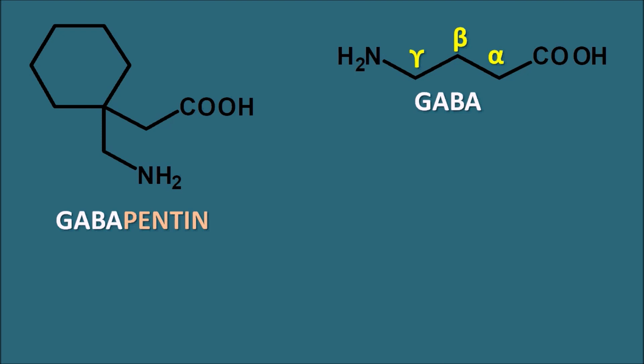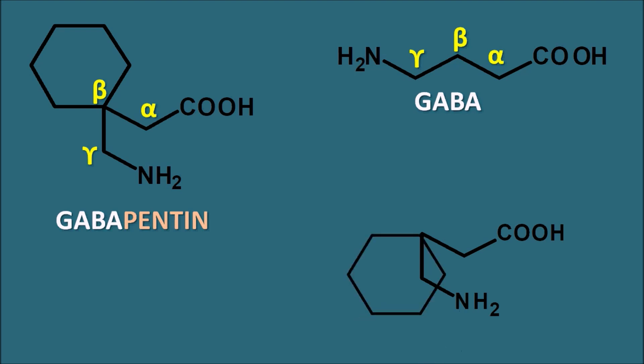We can observe the GABA moiety in Gabapentin — the alpha, beta, and gamma carbons — so we can again observe the gamma-aminobutyric acid within the structure of Gabapentin. In other words, Gabapentin is a structure made up of GABA as well as a cyclohexyl ring connected at the beta carbon. In this way, Gabapentin is a structural analog of GABA with a cyclohexyl substitution at the beta position.